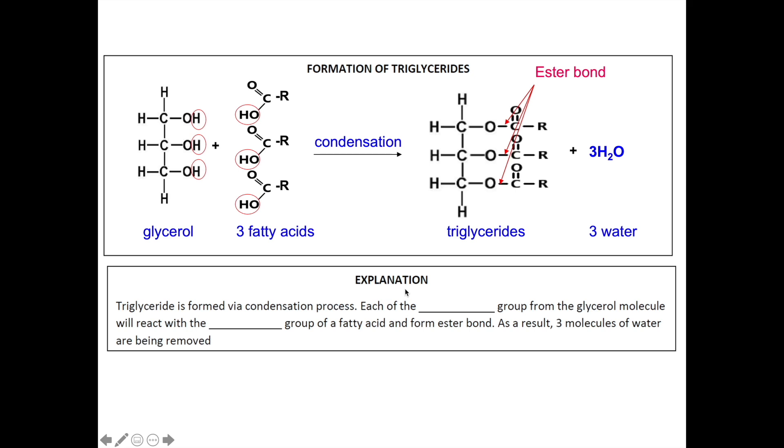When trying to explain the formation of triglycerides, triglycerides is formed via condensation process. However, it is important to note that it is not a true polymer because it is not made from repeating monomers. Each of the hydroxyl group from the glycerol molecule will react with the carboxyl group of fatty acid and form ester bond. When these two functional groups react, it results in the formation of ester bonds. Three water molecules are produced as the result of this reaction.